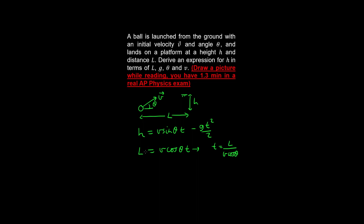Substituting the second equation into the first, we get h is equal to v sine theta multiplied by l over v cosine theta, minus g over two multiplied by l squared over v squared cosine squared theta. Doing some cancellations and noting that sine theta over cosine theta is tan theta, you get the final expression.